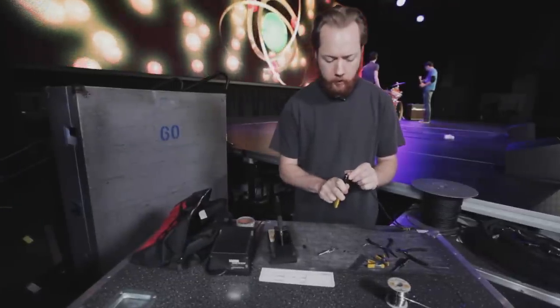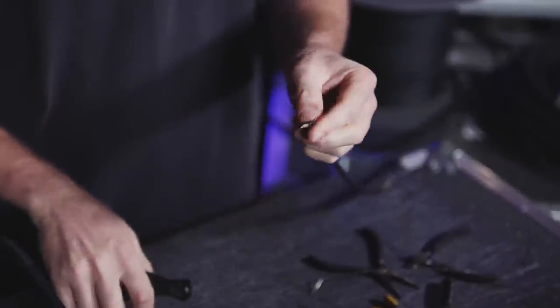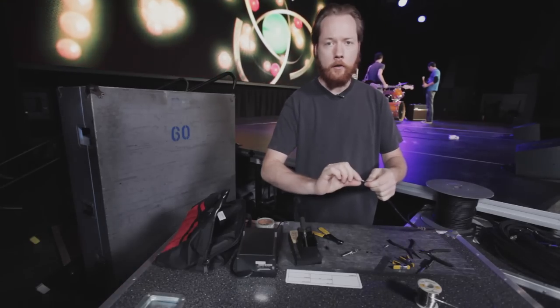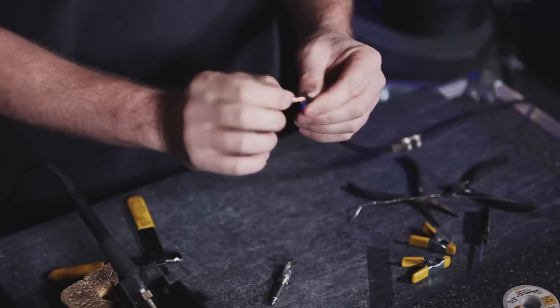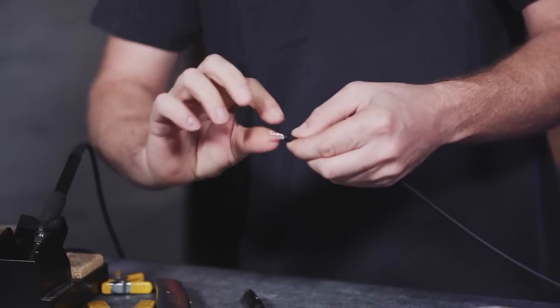Using the wire strippers once again, carefully cut through the center conductor's insulation and slide it off to the end of the wire. Go ahead and twist up the fine strands that are inside there so that they make a nice wire when we tin them shortly with the soldering iron.